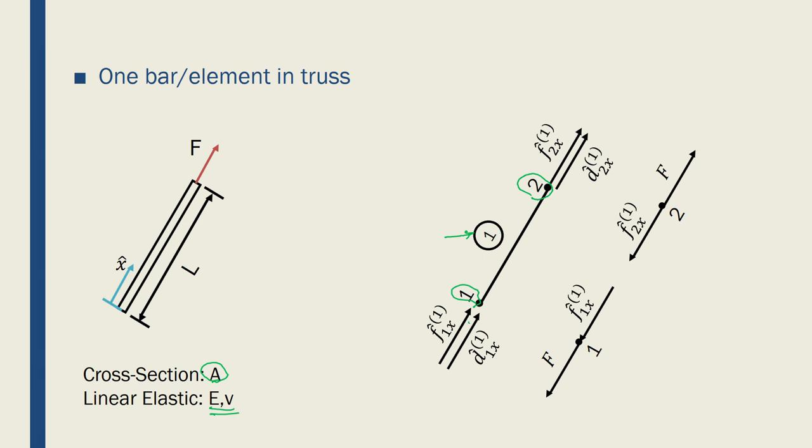And each node will have its own forces and displacements applied to it. Once again, if I draw, or if I write f1x1 with the hat, this means it's a force at node 1 of element 1 in x direction and local coordinate system.